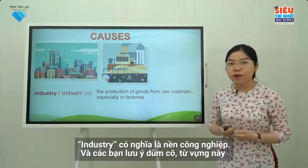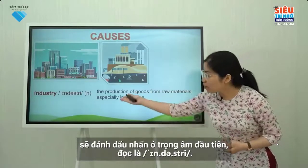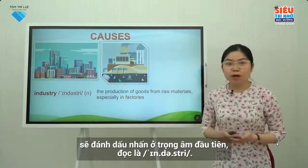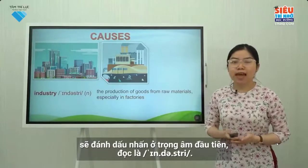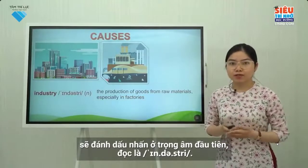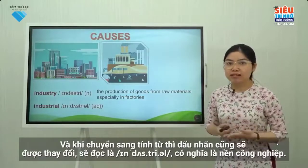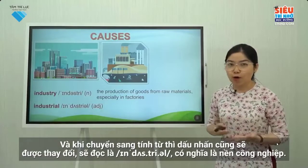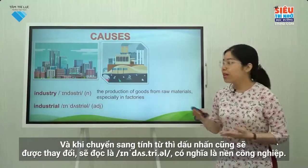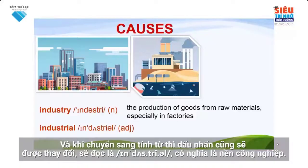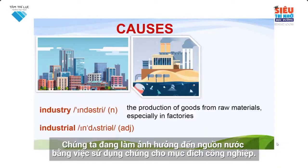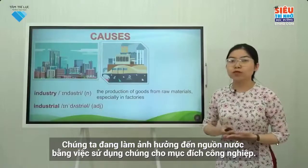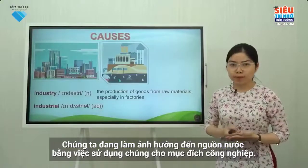Please pay attention to this word. It is stressed on the first syllable and we pronounce it as 'industry.' When we turn it into an adjective, the stressed syllable is also changed and it's pronounced as 'industrial.' We are affecting the water supply by using it for industrial purposes.